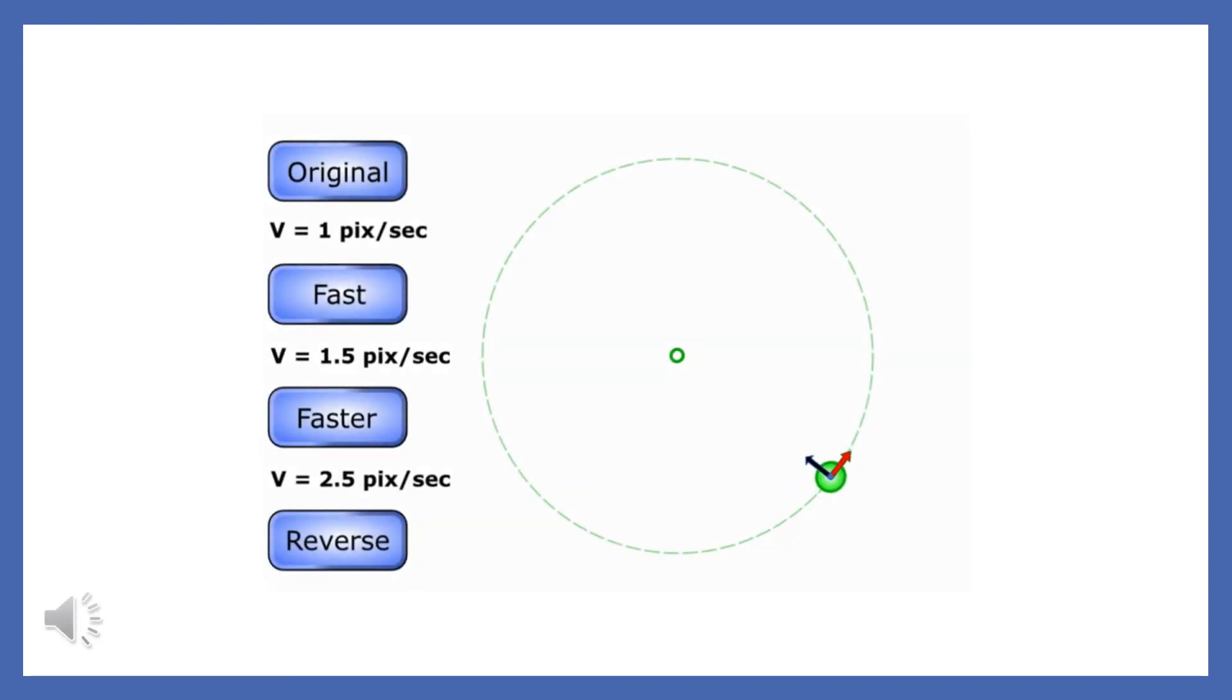The centripetal force needed for an object to move in a circle is determined by the object's velocity. The greater the velocity, the greater the force required to move at constant speed in a circle.